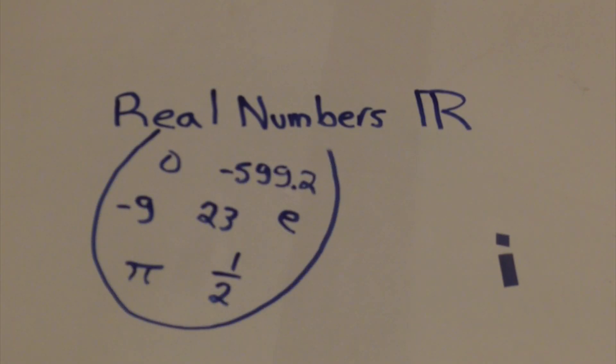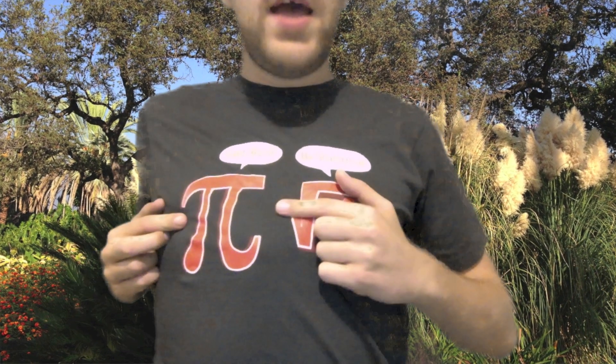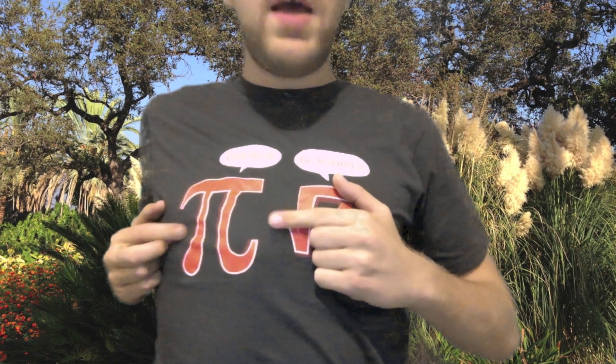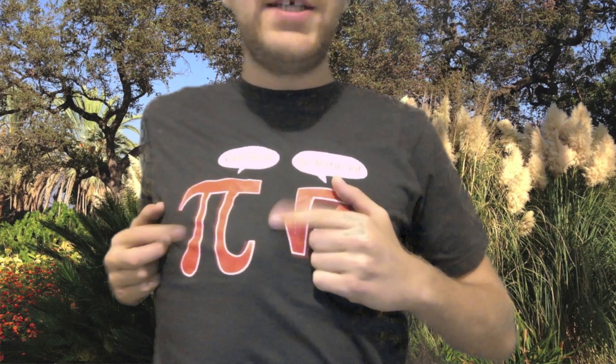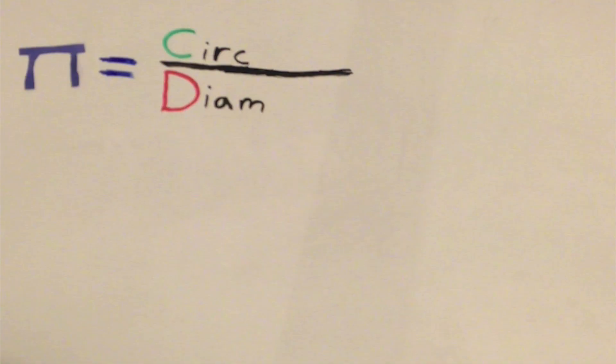Forget the Batman, there was a real-life hero. i's not a real number, it's the square root of minus 1, and pi's a ratio of circumference to diameter.